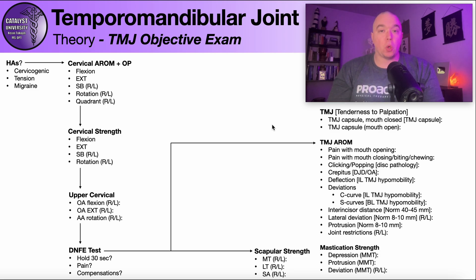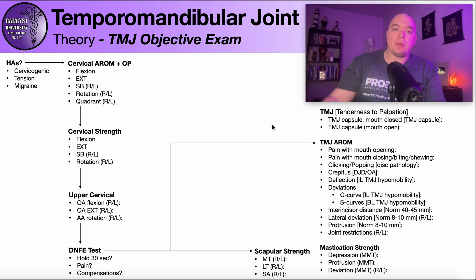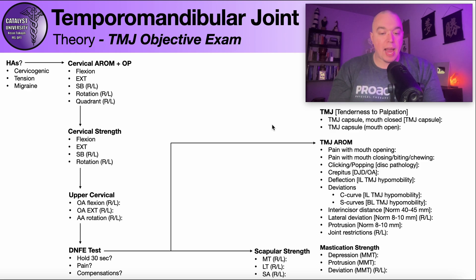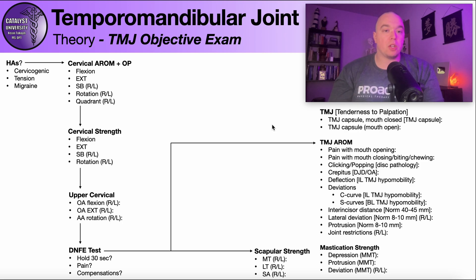Then we move on to cervical strength — flexion, extension, side bending, and rotation. Some people would say don't even worry about cervical strength, but I'm going to give you a good reason to actually worry about it. When I was a very young physical therapist, this kid came in — he was 17 years old, he had jaw pain. I did start with cervical active range of motion, I applied overpressure, and that was all negative. He had excellent range of motion, as you'd expect for someone who's 17, and overpressure did not provoke any jaw pain.